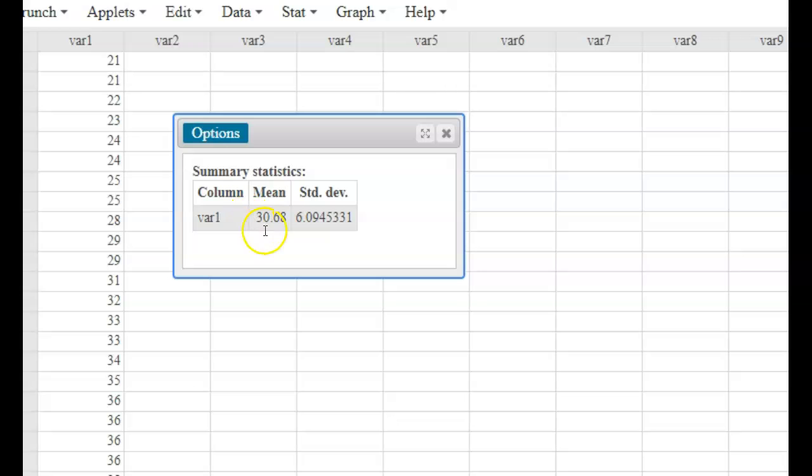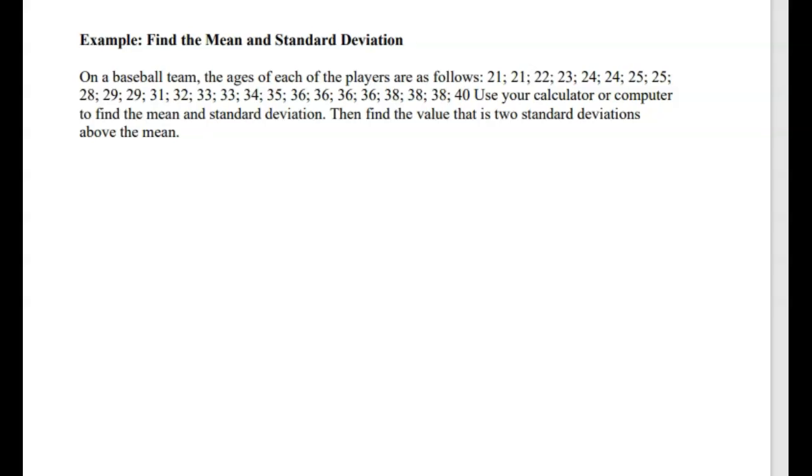Okay, so it gives us a mean of 30.68, a standard deviation of 6.09. So let's round it to 30.7 and 6.1. So this is the mean and this is the STDEV.